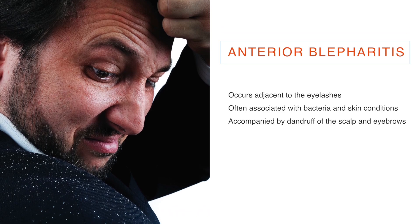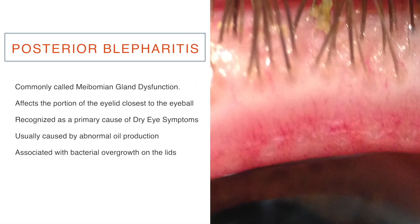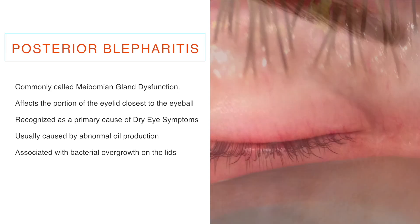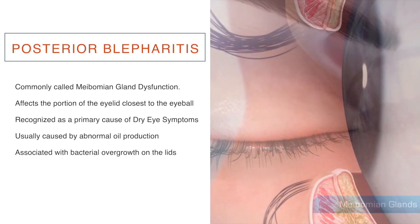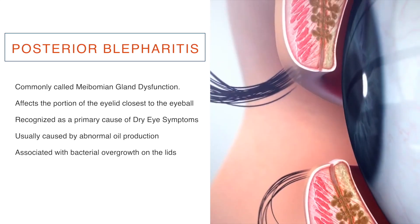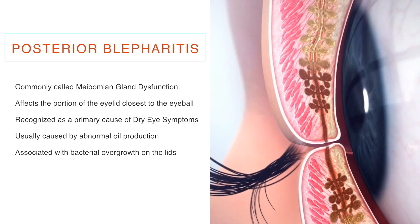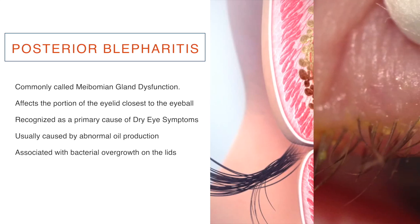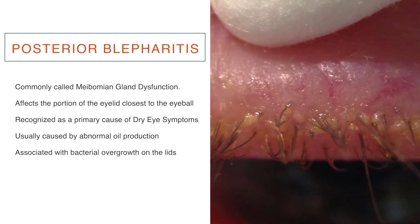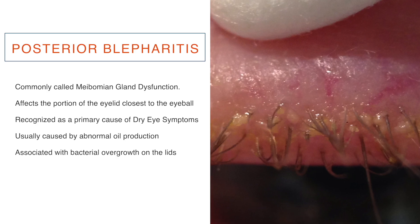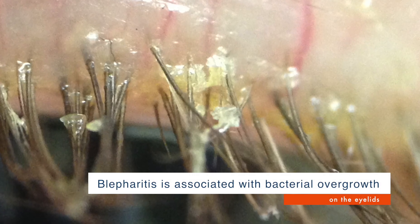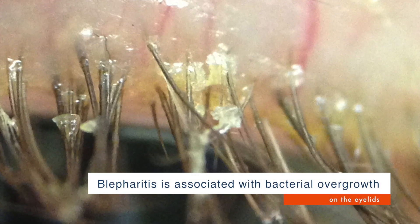The second type is posterior blepharitis, which is more commonly called meibomian gland dysfunction. It affects the portion of the eyelid closest to the eyeball and is recognized as a primary cause of dry eye symptoms. Posterior blepharitis is usually caused by abnormal oil production by eyelid glands and is associated with bacterial overgrowth on the lids.